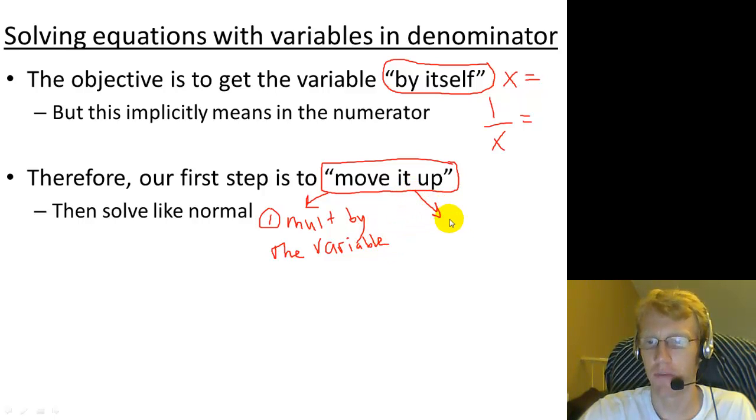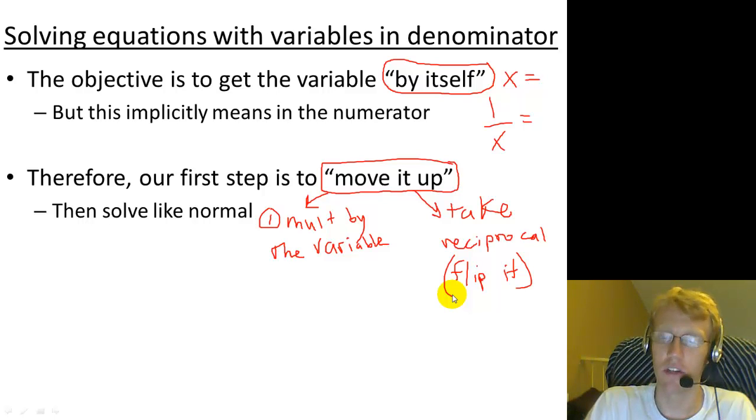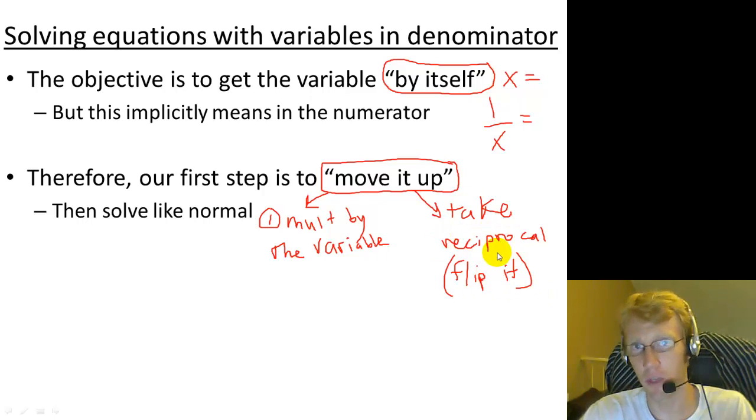The other option is to take the reciprocal of both sides, and that is also called flipping it. So if you had something like 5 over x, if you flip that over, you get x over 5, and now x is in the top. But you have to remember that whatever you do to one side, you also have to do to the other side. So if you take the reciprocal or flip one side of the fraction, you also have to flip the other side, and then solve like normal.